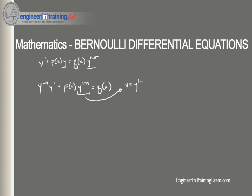So v equals y to the 1 minus n. Once we differentiate this and plug it back in, this will lead to a differential equation that we can solve. We need to be careful with the derivative y prime — we need to determine what y prime is in terms of our substitution. All we need to do is differentiate both sides with respect to x. Remember that both v and y are functions of x, so we'll need to use the chain rule on the right side.